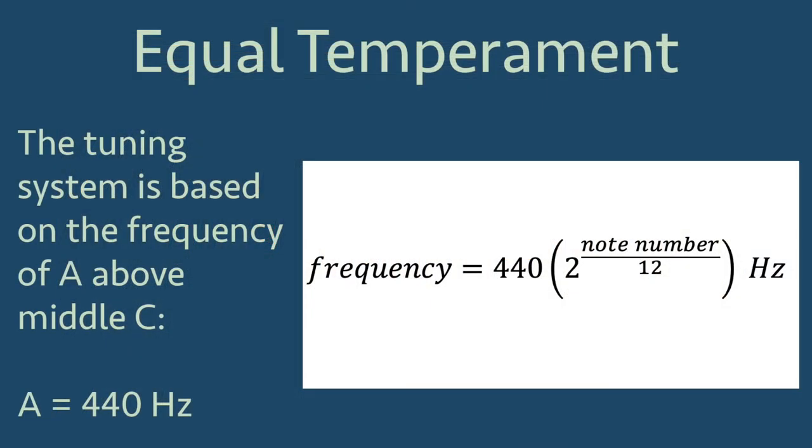Equal temperament bases the tuning of all notes off of the tuning of A above middle C, which has frequency 440 Hz. With this foundation, the frequency for any other note can be found with the following formula, which uses an exponential function. Frequency equals 440 times 2 raised to the power note number divided by 12, where note number is the number of notes from A equals 440 Hz, which has note number 0.